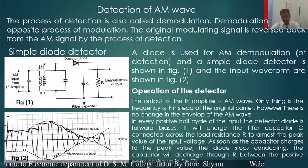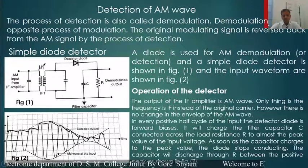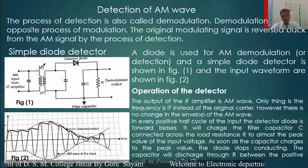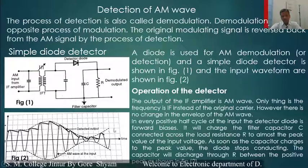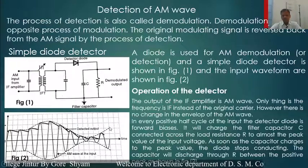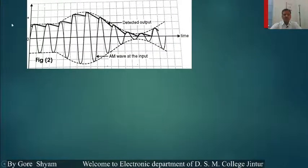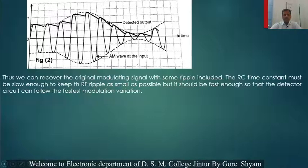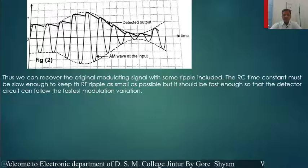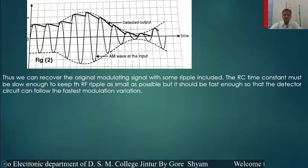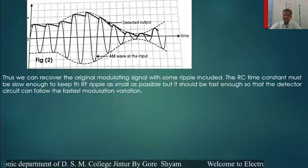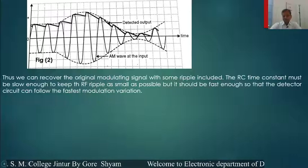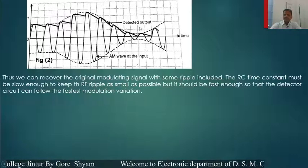The capacitor immediately discharges, and therefore at the output we are getting such a waveform. This output is nothing but the envelope — we are getting the envelope of the carrier wave. This envelope is nothing but the modulating signal. This output is the detected output, and it contains some radio frequency ripple at the output.